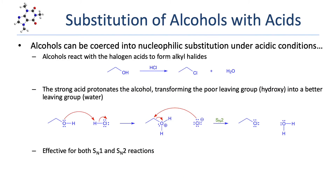Fortunately, alcohols can be coerced into nucleophilic substitutions under acidic conditions. Alcohols can react with the strong halogen acids to form alkyl halides. So in this example, we have ethanol reacting with HCl to form an alkyl halide and water. If we look at the reaction mechanism, we can see why this works. The first step is an acid-base reaction, in which the alcohol acts as a base and the HCl acts as an acid.